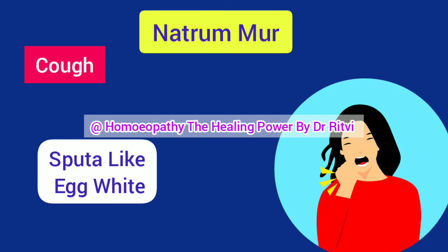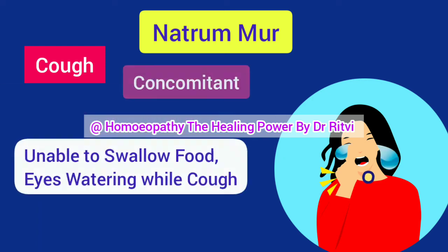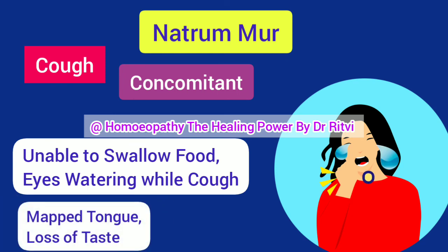The concomitant symptoms of Natrum Mur in cough are very important for prescription. The patient finds inability to swallow food. Whenever the patient coughs, tears stream down the face, just like in the homeopathic medicine Euphrasia. There is also a mapped tongue with red insular patches during cough, and the patient suffers from loss of taste in the mouth.